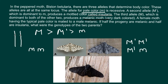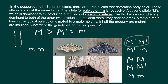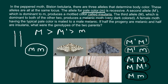For melanic moths, three different genotypes are possible: capital M / capital M, capital M / M prime, and capital M / small m. So there are three genotype variants for melanic, two for insularia, and one for pale.